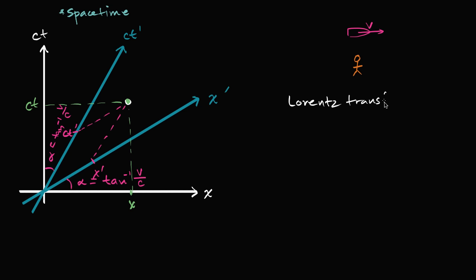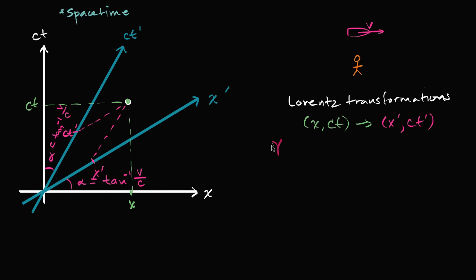The Lorentz transformations allow us to go from x, ct to x-prime and ct-prime. To help us think about it, I'm going to introduce some variables to show the symmetry of the Lorentz transformations. We'll start with what we call the Lorentz factor, because this shows up a lot in the transformations. The Lorentz factor, denoted by the Greek letter gamma, is equal to one over the square root of one minus v squared over c squared.